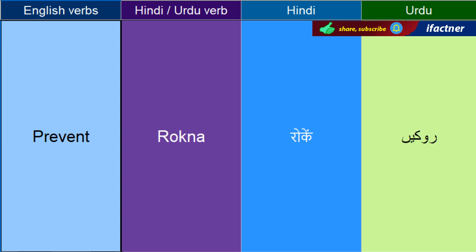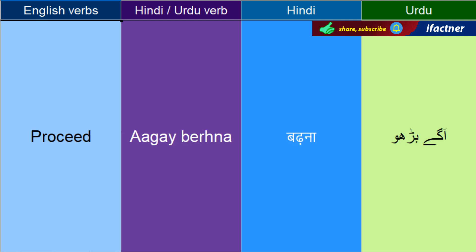Rokne ko kehthay hain — Prevent. Koyi cheez print kerne ko — Print. Aagay berhna — Proceed. Proceed to page number 56 — aagay jao, safa number 56.